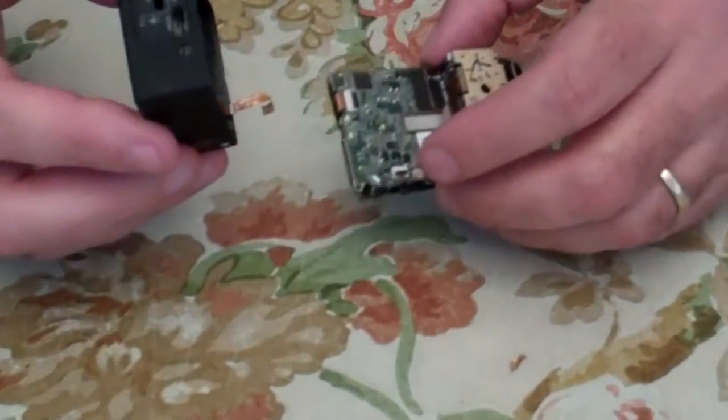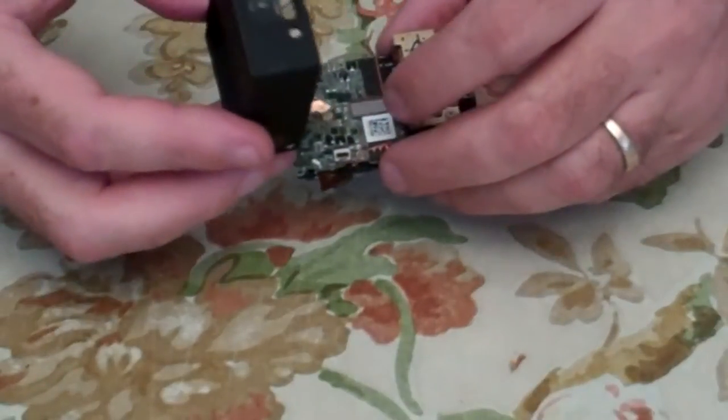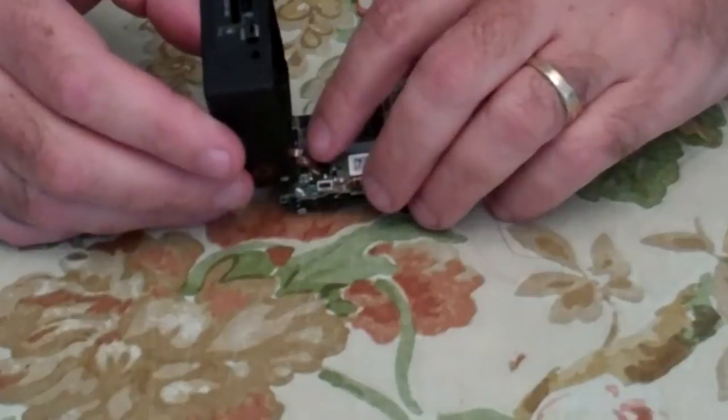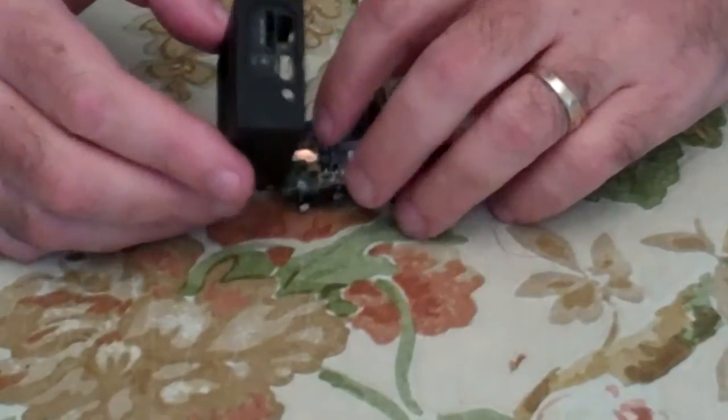Remember that there's a latch on there. We want to make sure the latch is in the up position, otherwise the ribbon cable won't slide in. We're going to slide the ribbon cable into the connector. It goes into the bottom of the connector.